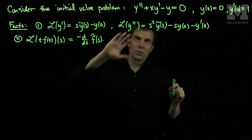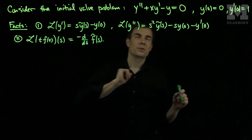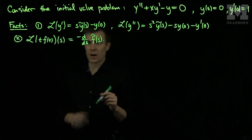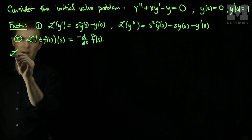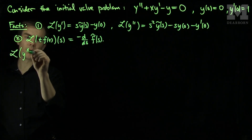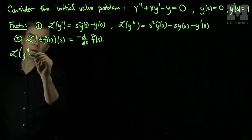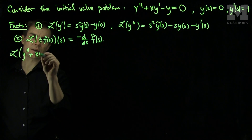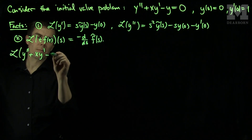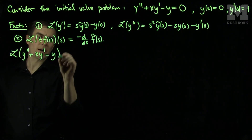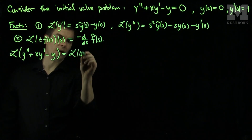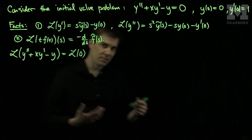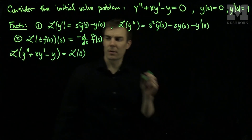Using these two rules, I will Laplace Transform my equation now. If I Laplace Transform our equation, I will have the Laplace Transform of y double prime plus xy prime minus y equals the Laplace Transform of zero, which is just zero.